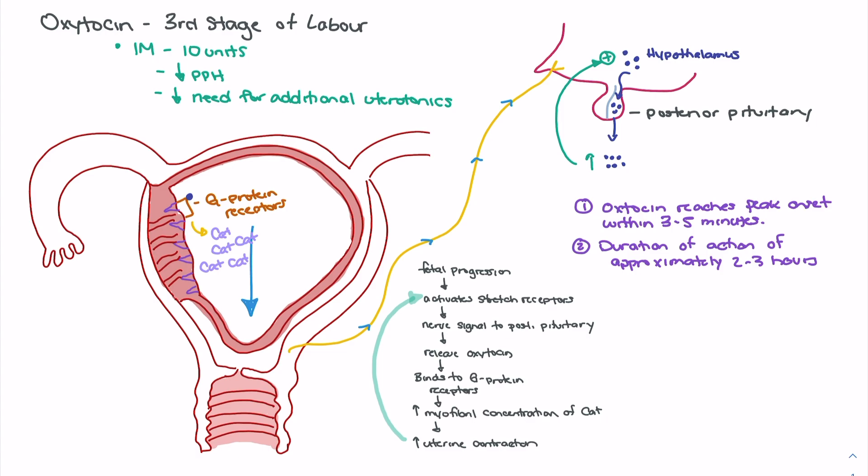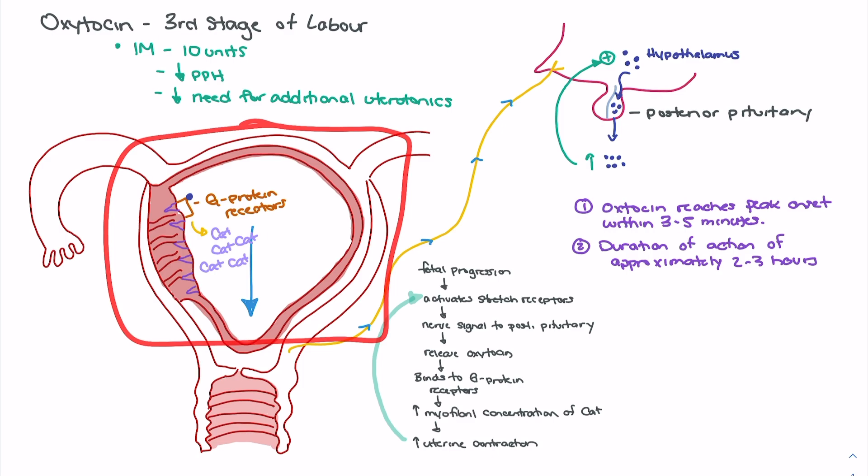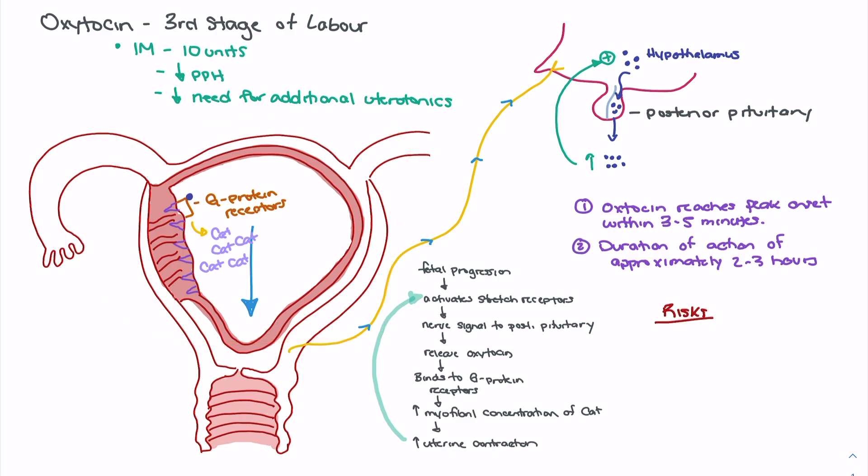Research tells us that an IM dose of 10 units of oxytocin prophylactically supports an increase in uterine contraction, supports prolonged uterine contraction during the third stage of labor, promotes delivery of the placenta, and decreases the chances of postpartum hemorrhage. As a result, the patient also becomes at less risk of needing additional or stronger uterotonics, because the positive feedback loop has been maintained during the third stage of labor to deliver the placenta.